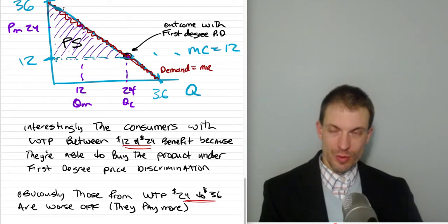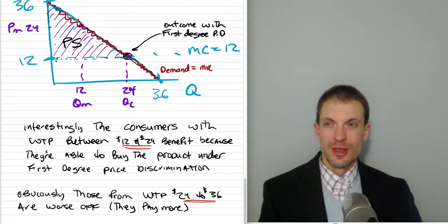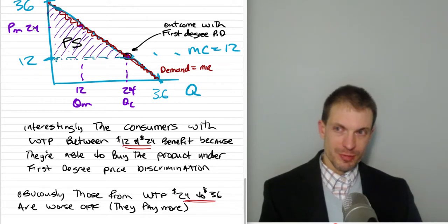However these consumers right here are worse off because they're charged the higher price all the way up to their willingness to pay, whereas if we had a single price monopolist the price would have been 24.